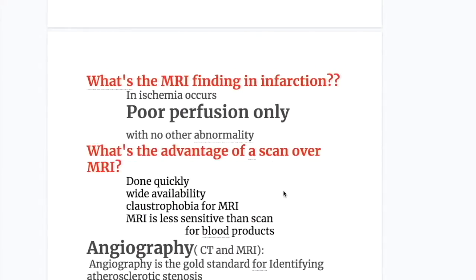What are the MRI findings in infarction? In ischemia, there is poor perfusion only, with no other abnormalities seen on MRI.